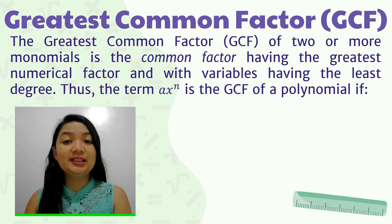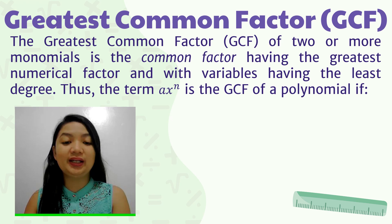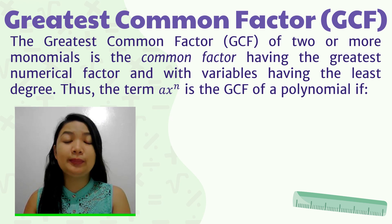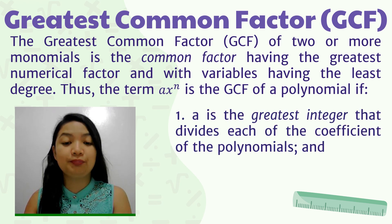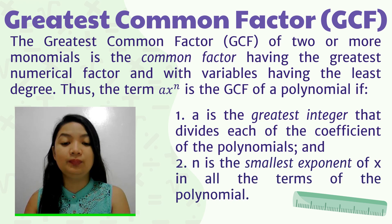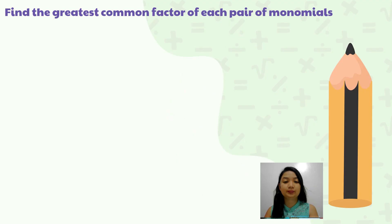The greatest common factor of two or more monomials is a common factor having the greatest numerical factor and with the variables having the least degree. Thus, the term ax raised to n is the GCF of a polynomial if a is the greatest integer that divides each of the coefficients and n is the smallest exponent of x in all of the terms of the polynomial. To understand this further, let us have the following examples.